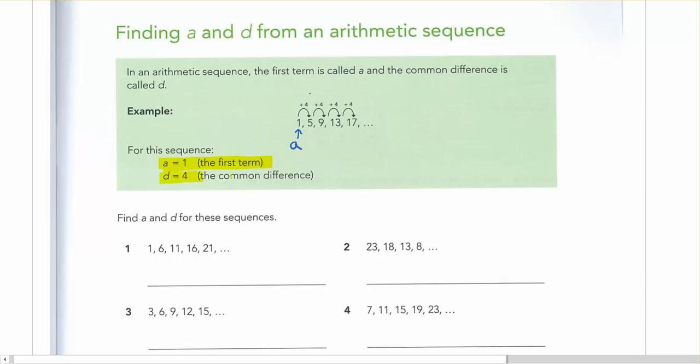And d is what we call the common difference. And you can see here, that's the amount that you either add or subtract by each time. So again here, this is going to be d.